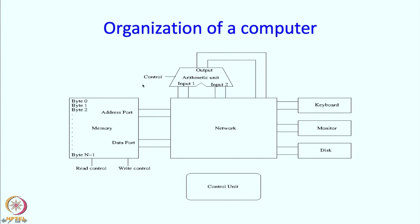The arithmetic unit can receive inputs, and it has some control ports. Based on what value is sent on the control ports, the numbers will get added, multiplied, subtracted, or something like that, and they will appear on the output port. They can go back into the network and be sent back to the various components. There can be a keyboard, a monitor or screen, and also a disk connected through the network. Finally, the most complex part is the so-called control unit, which controls all of these things.